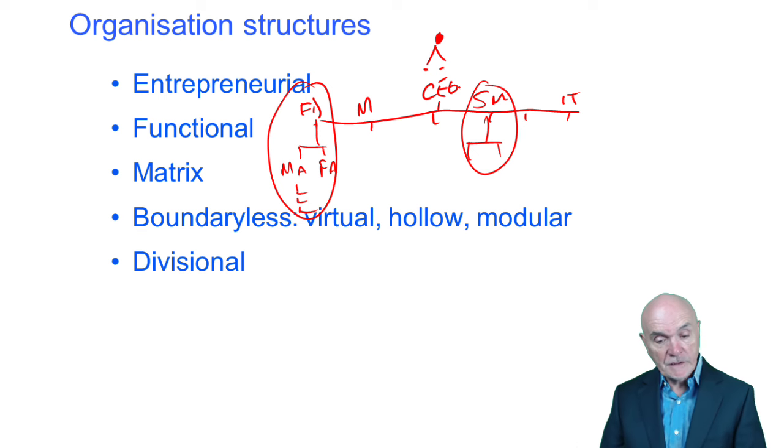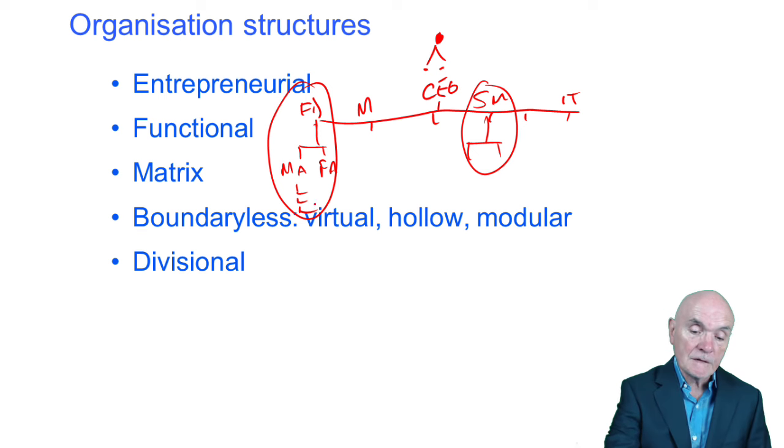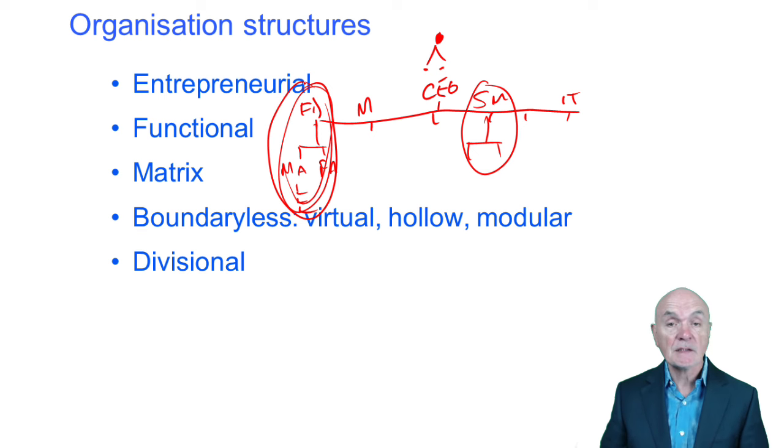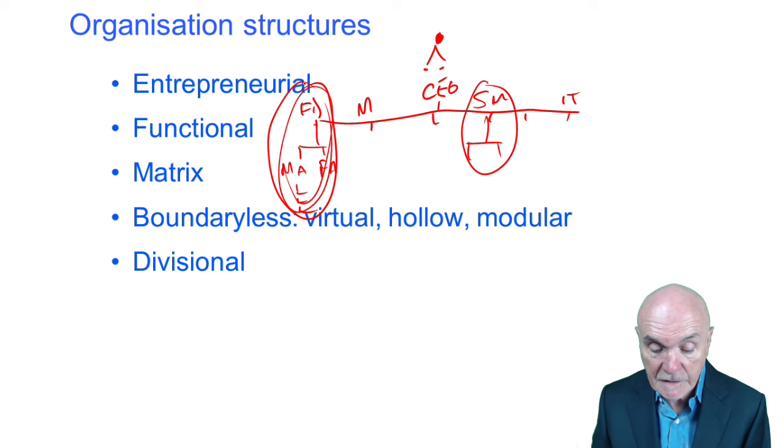And it's very efficient. You get great economies of scale. All the accounting goes through the accounting department and so on. You can get great expertise within that. And it's a terribly, terribly common way to structure organizations. And in your notes, it has there a list of the major functions within organizations, like ordering and purchasing, manufacturing, production.